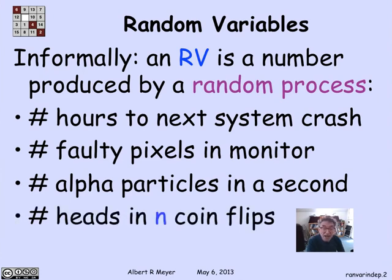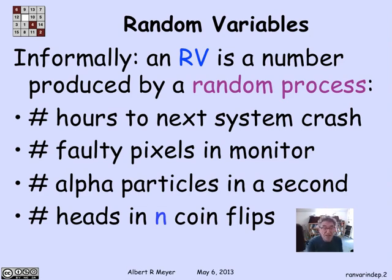We'll also look at the standard abstract example of flipping coins. If I flip coins, the number of heads in a given number of flips — say I flip a coin n times — the number of heads will be another standard random variable.